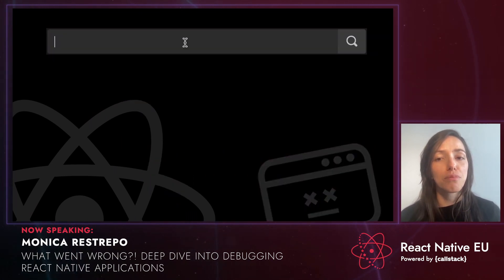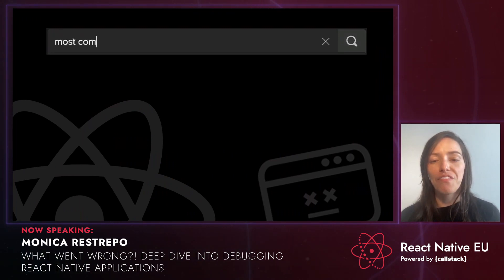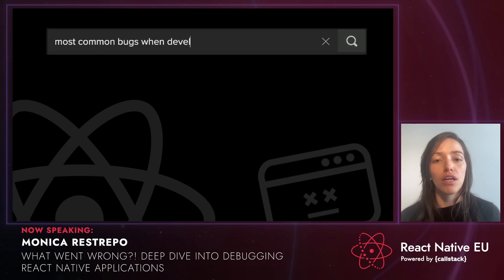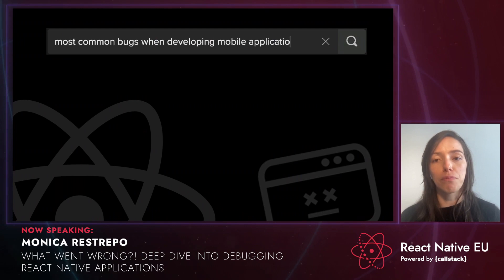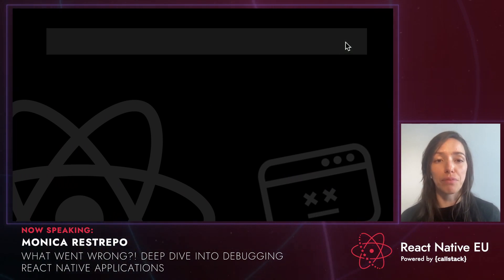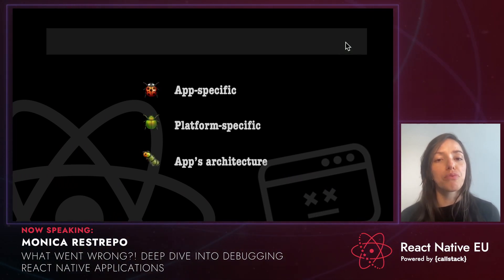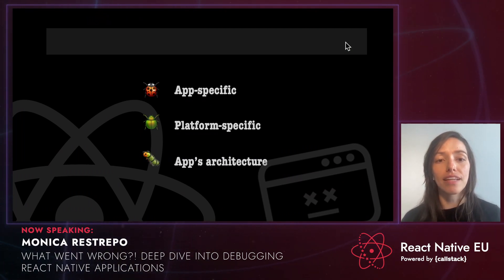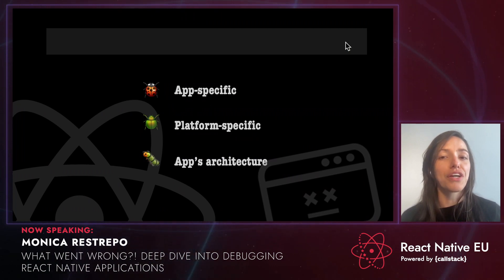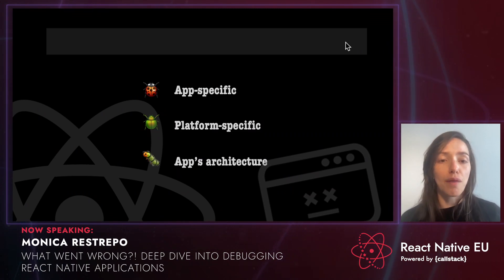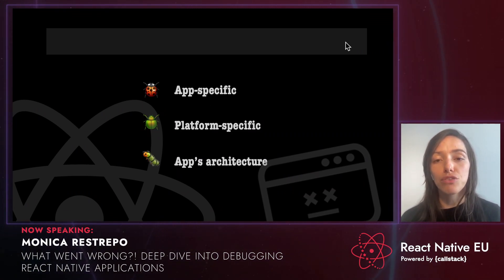But before we jump into talking about these debugging frameworks, I think it is very important to talk about bugs. What are the most common bugs we often find within our applications? Multiple resources online point to many types of bugs that can appear when developing mobile applications. The majority of these bugs are concentrated in three different areas: app-specific bugs, platform-specific bugs, and those related to your app's architecture.